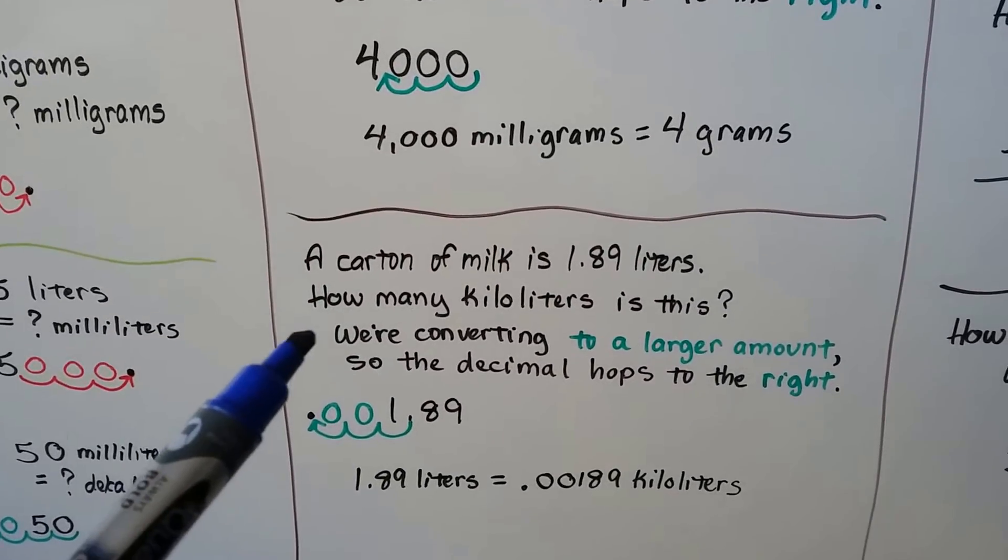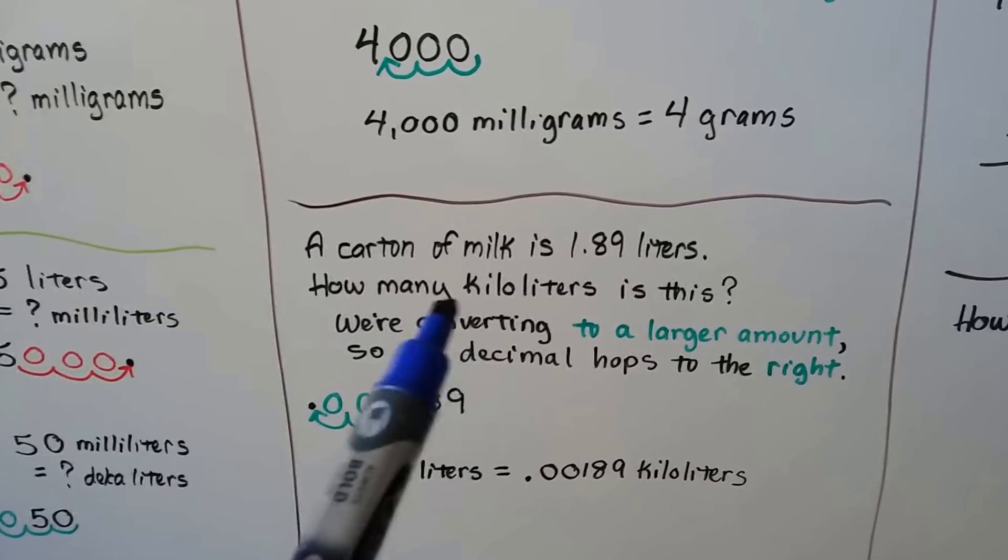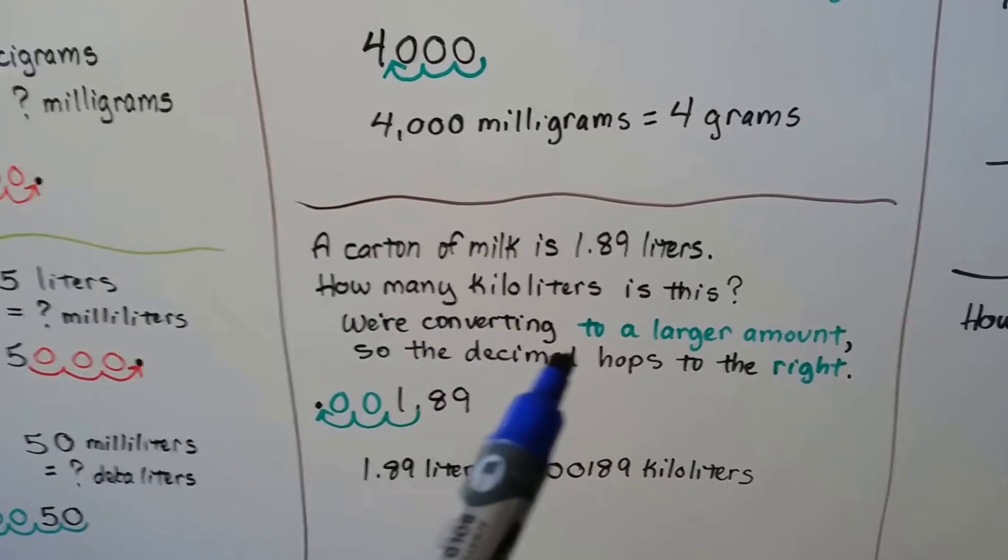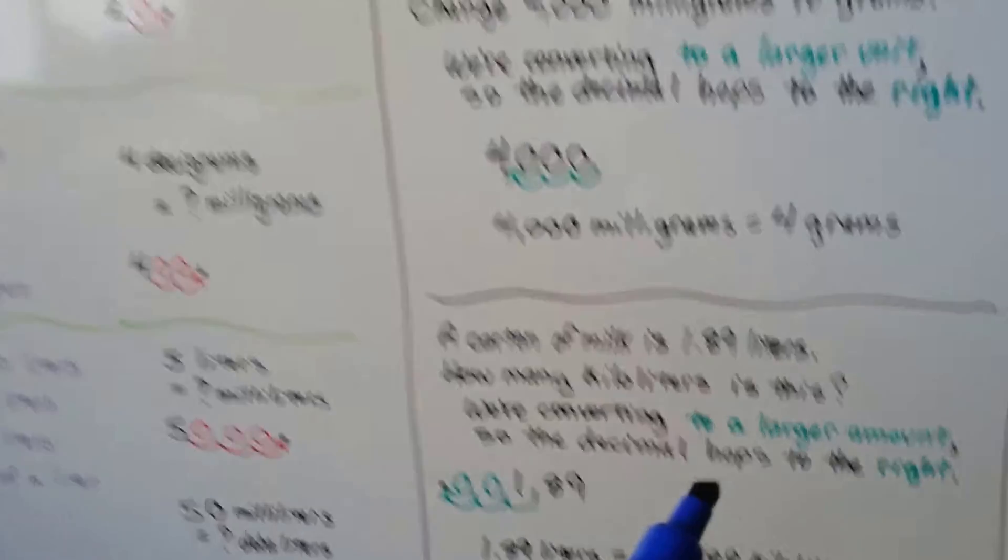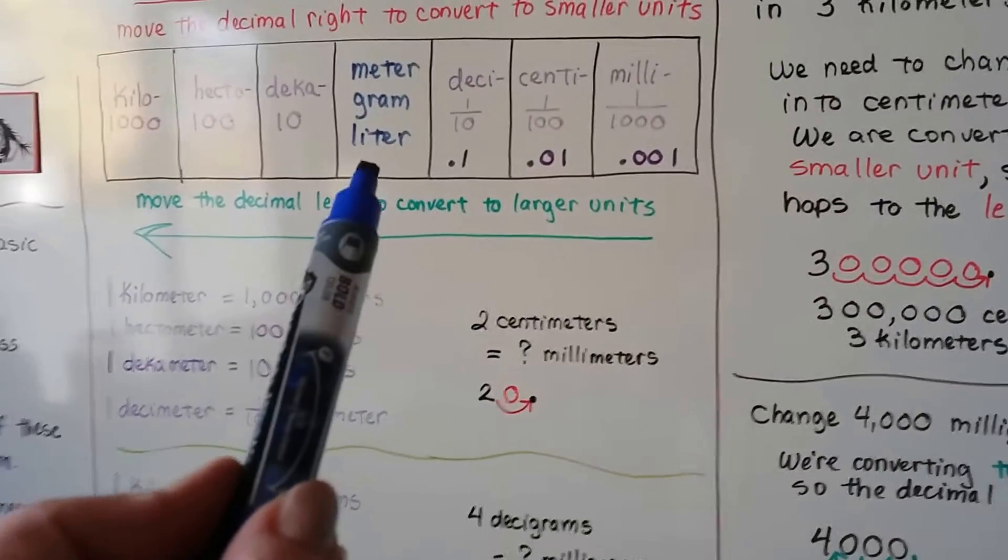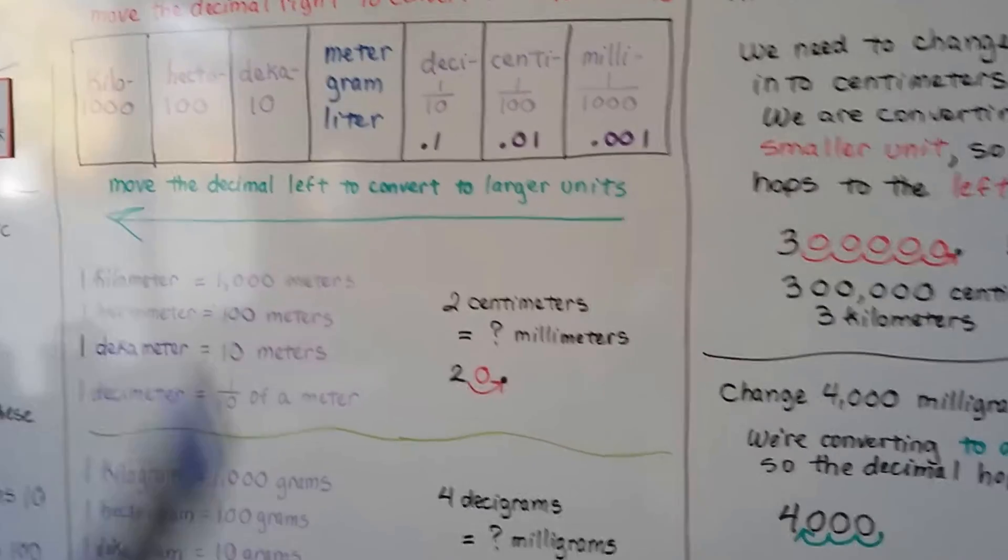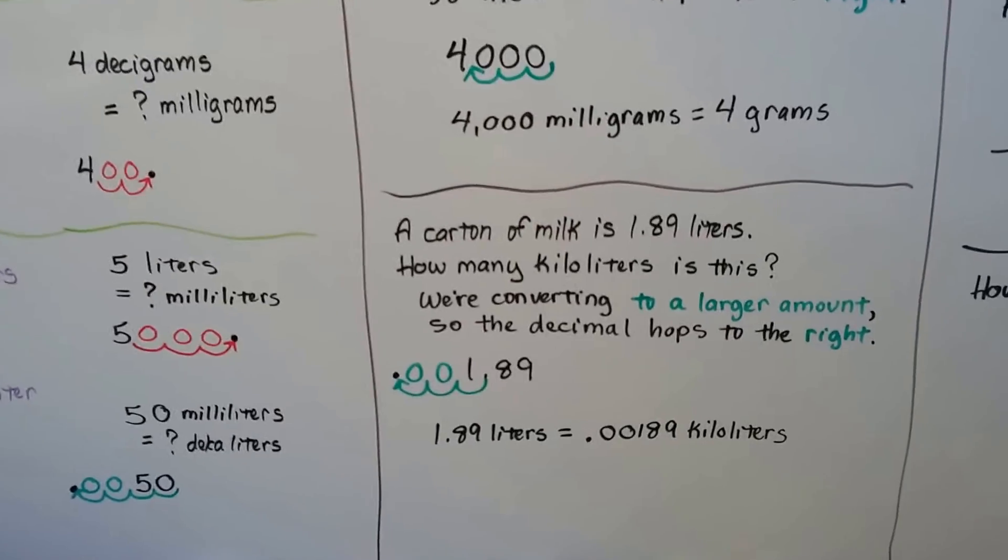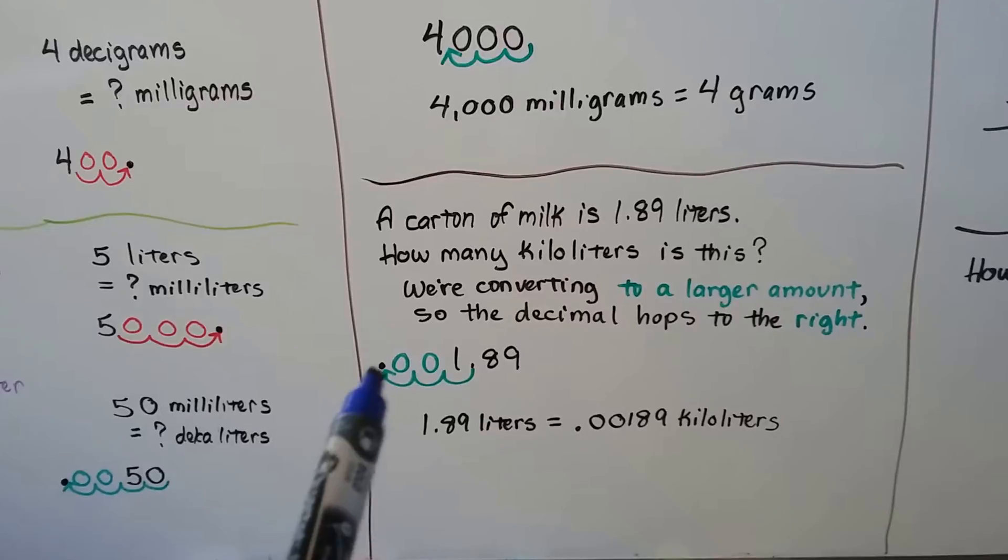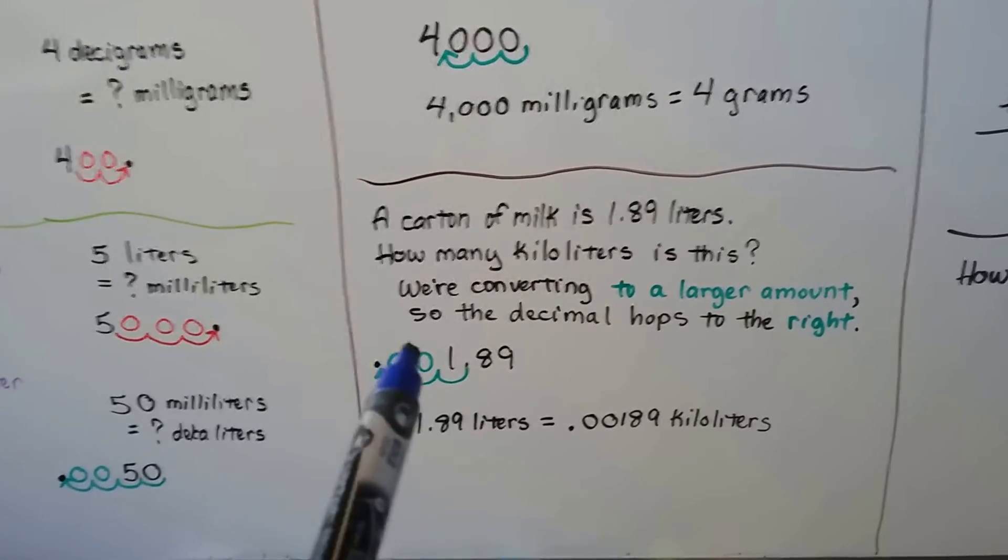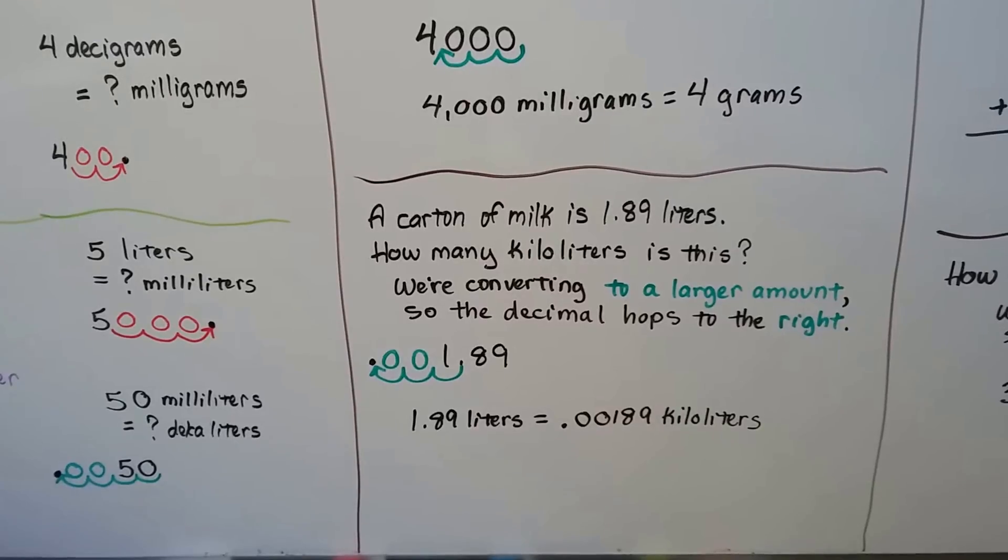The carton of milk is 1.89 liters. How many kiloliters is this? Well, kiloliters are much larger. So we're going to move to a larger amount. So the decimal is going to hop to the right to go from liters to kiloliters. We have to go one, two, three hops. So this decimal is going to go from in between the one and the eight, one, two, three hops. We put in some zeros as placeholders and we've moved our decimal.